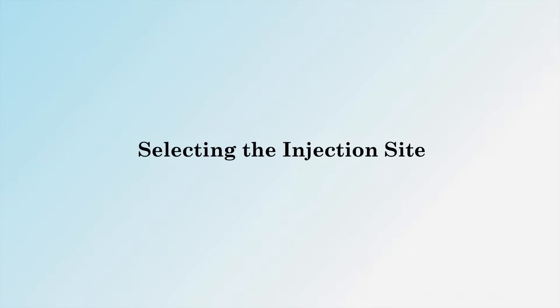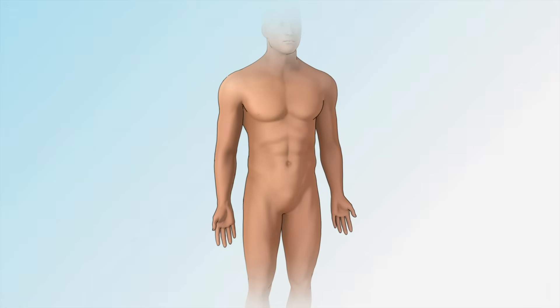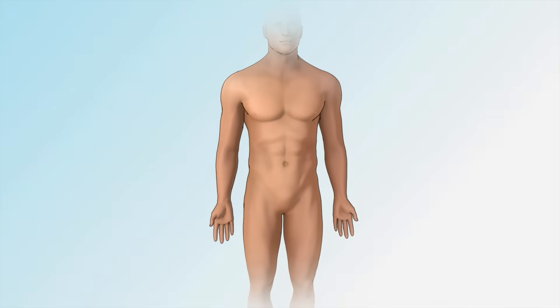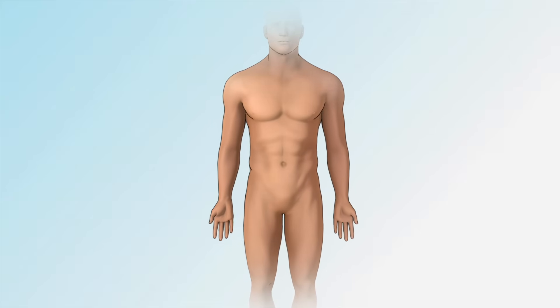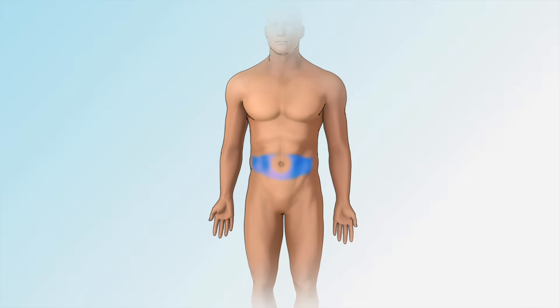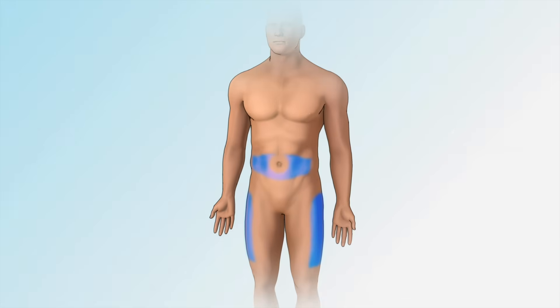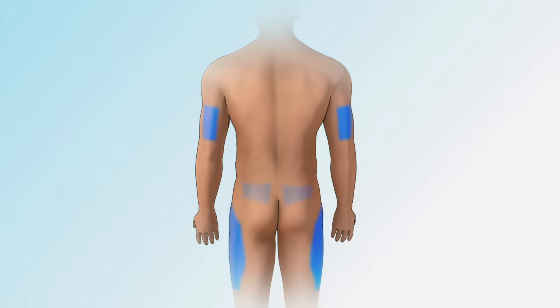Selecting the injection site. Before injecting your insulin, select the injection site on your body. The areas for insulin injection include the abdomen or belly, the thighs, the back of the upper arms, and the buttocks.